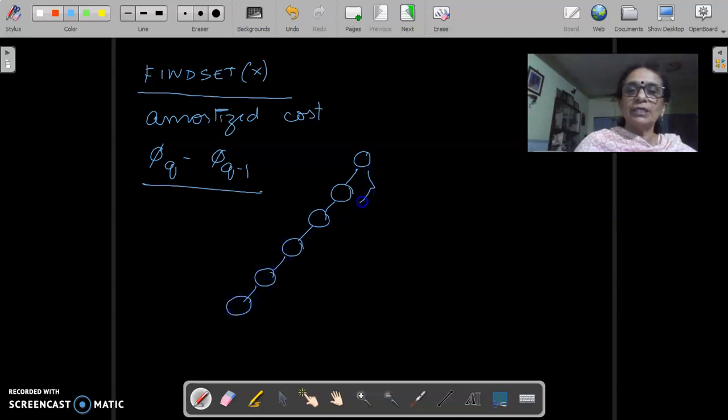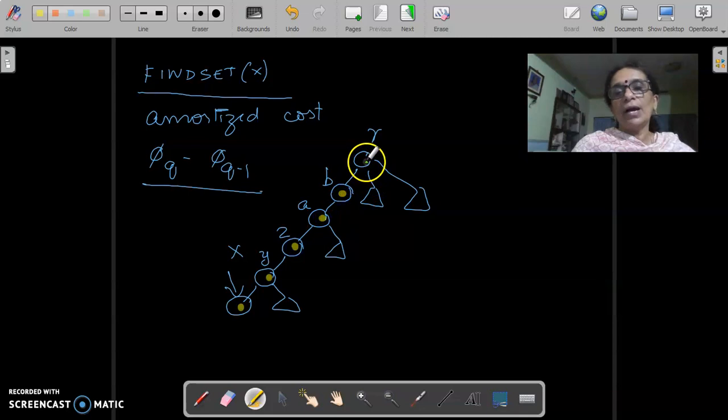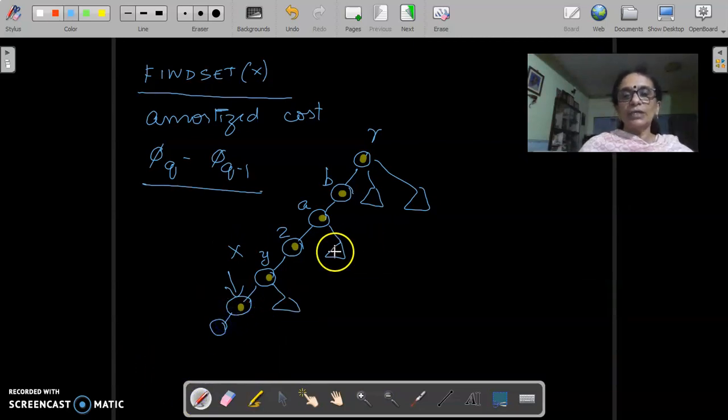So, if we had some tree like this and suppose this was at x and this is at r, let us give names to these: y, z, a, b, etc. Then, which are the nodes that are going to get affected by this find set? The nodes that are going to get affected are this x, y, z, a, b and r to some extent. And as far as other nodes are concerned, even if x had been having some child nodes or something, all the other nodes are not affected. Only the yellow nodes are going to be affected.